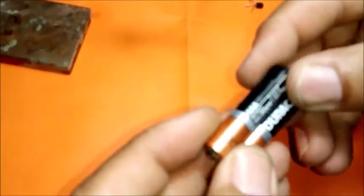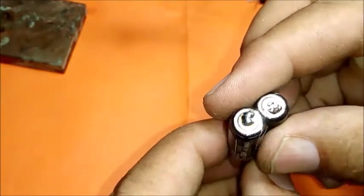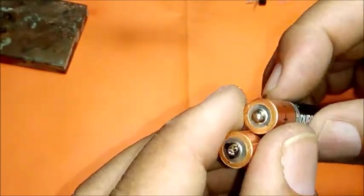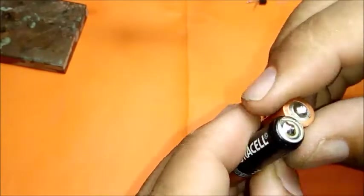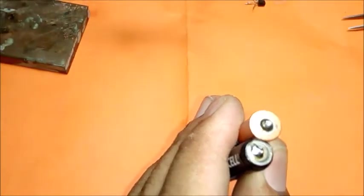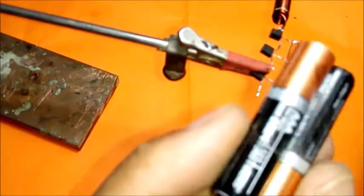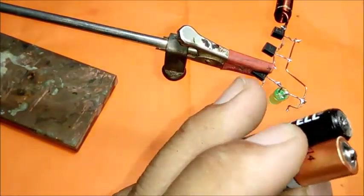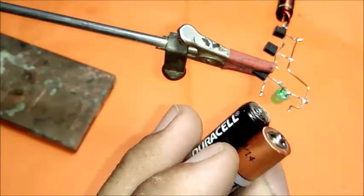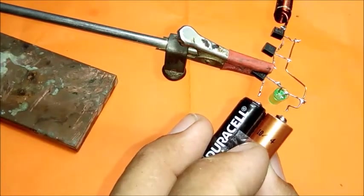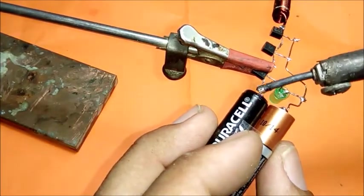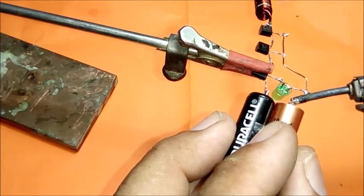There are 2 of 1.5V batteries, so we get 3 volts. This side is positive, this side is negative. We connect the negative to the transistor side. The positive is on this side.